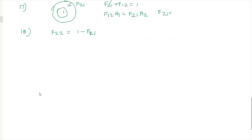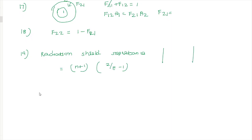The next question is about radiation shields. The general resistance formula for two plates with one radiation shield uses: R = (1/ε1 − 1) + (1/ε_shield − 1) + (1/ε2 − 1), giving n+1 resistances for n shields. The formula simplifies when all emissivities are equal.